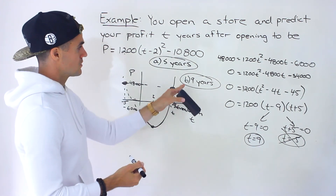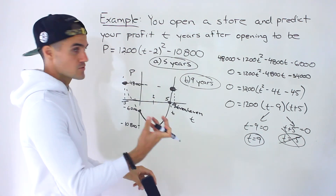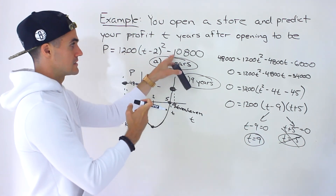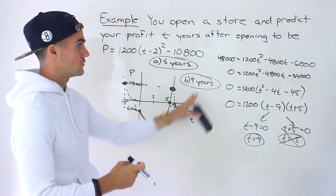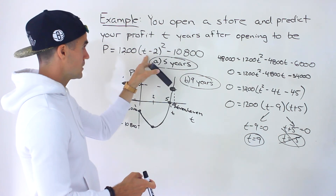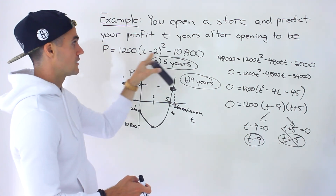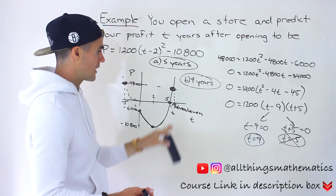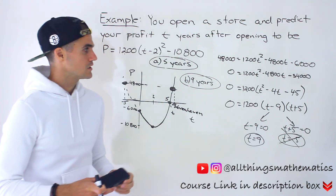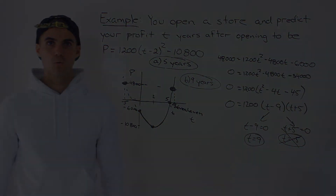You can also check your solutions. Take 9 years and plug it in: 9 minus 2 is 7, 7 squared is 49, times 1,200 gives 58,800, minus 10,800 gives $48,000. Same with T equals 5: 5 minus 2 is 3, 3 squared is 9, times 1,200 is 10,800, minus 10,800 gives a profit of 0. So with this kind of question, if you're given a vertex form equation, there are multiple ways you can work with it.